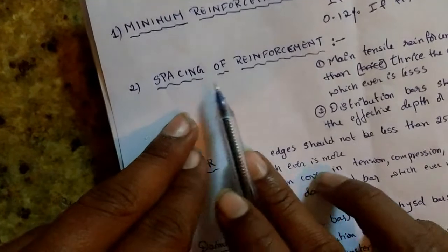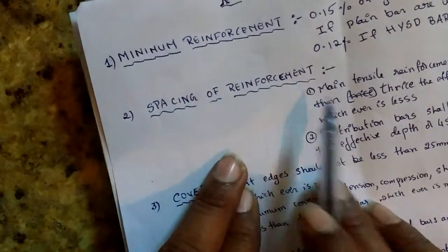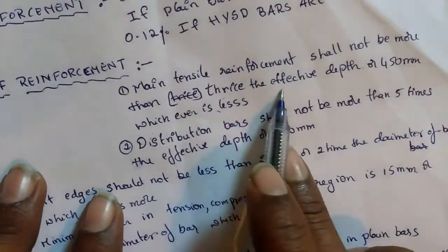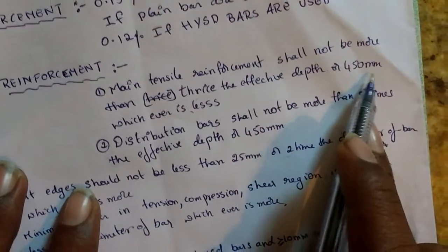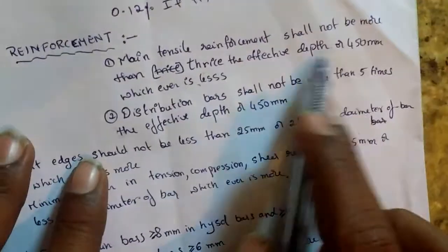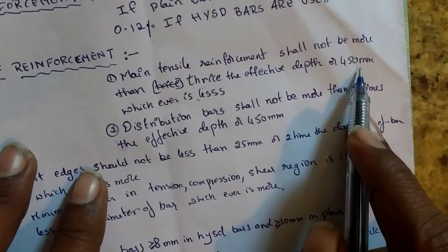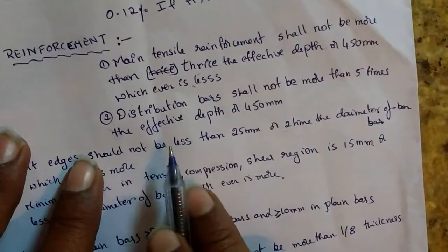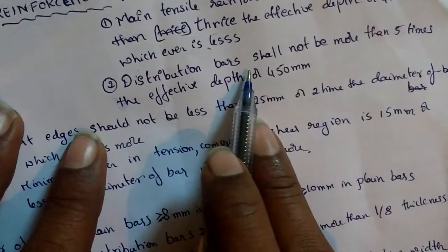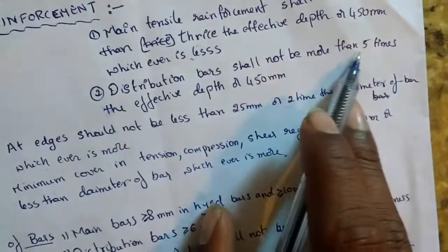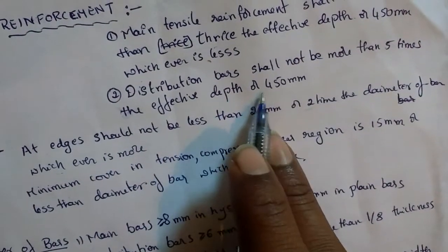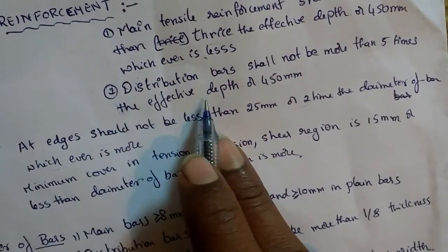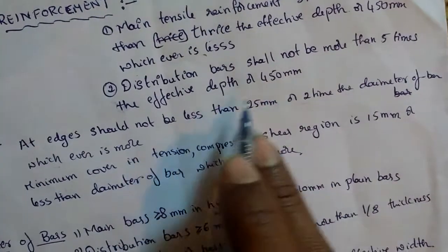Spacing of reinforcement is known as pitch. Main tensile reinforcement shall not be more than thrice the effective depth or 450 mm, whichever is less. Distribution bars shall not be more than five times the effective depth or 450 mm, whichever is less.